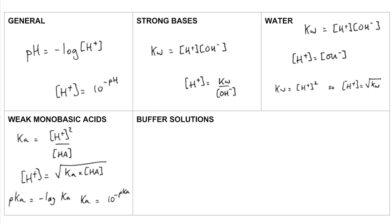And finally, buffer solutions. The H plus concentration of a buffer solution is equal to KA. So that's the acid dissociation constant of the weak acid that's making the buffer.